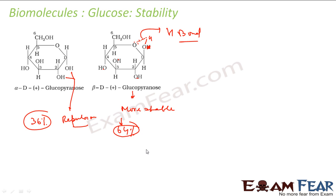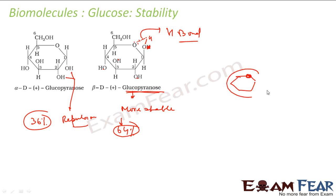Two factors make beta-D-glucose more stable: first, there is no OH–OH repulsion as seen in alpha glucose; second, there is hydrogen bonding in the beta form which further stabilizes the molecule. This structure is also called glucose pyranose because it is similar to the pyran structure.